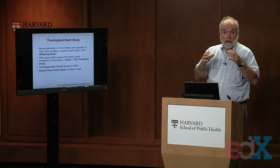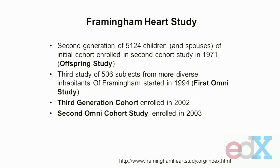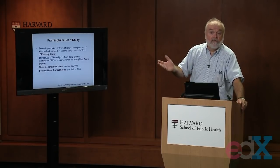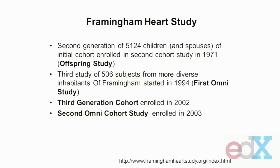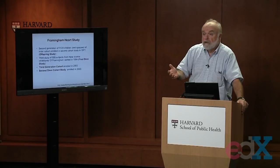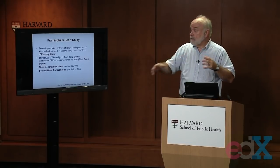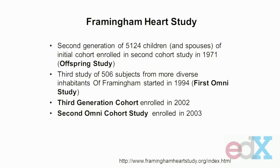There have been other studies built on the Framingham original cohort. About 23 years after the original cohort was started, they started a second cohort study of 5,124 people who were the children — the offspring — of those initial participants, along with their spouses. As the town of Framingham evolved and took on a different racial and ethnic background, in 1994 they took another 506 people somewhat randomly selected from the town as the first Omni study. In the early part of this century they took a third study — a cohort of the offspring of the offspring, the grandchildren of the original cohort, along with their spouses. By taking the second and third generation, they were able to do family history studies. And then more recently they did a second Omni study, a separate sample from the town of Framingham, Massachusetts.